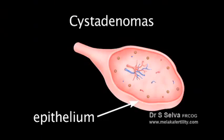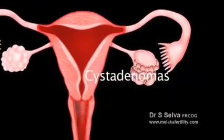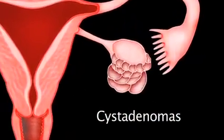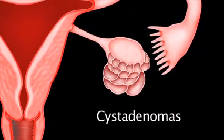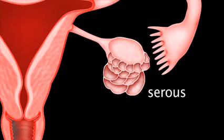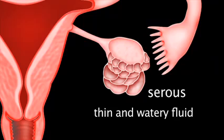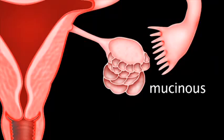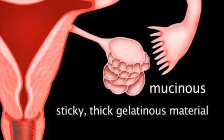Cystadenomas develop from cells that cover the outer part of the ovary, called the epithelium. Cystadenomas are often attached to an ovary by a stalk rather than growing inside the ovary itself, which means they can grow to a large size. They are not normally cancerous but need to be surgically removed. There are two types of cystadenomas, namely serous and mucinous. A serous cystadenoma is filled with thin, watery fluid. A mucinous cystadenoma is filled with sticky, thick, gelatinous material.